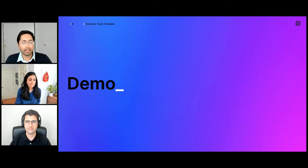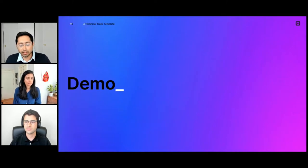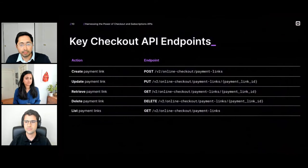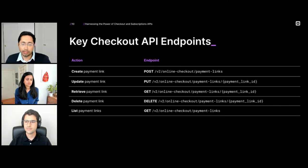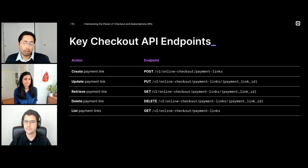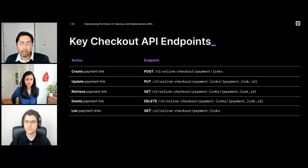Thanks, Divya, for that great introduction on all the new features. In this demonstration, we'll be focusing on new endpoints that we've added, and we'll walk through an example of how to create a payment link. Here are the endpoints we've added to our Checkout API — we'll be mainly focusing on the Create Payment Link endpoint. All the other endpoints are mainly used to manage the payment link that we create. The Create Payment Link supports most features of the Create Checkout endpoint and also lets you configure your checkout experience. We recommend developers use the Create Payment Link endpoint for any new integrations through the Checkout API.